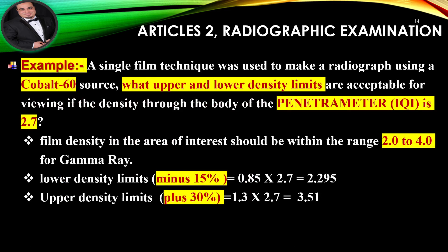Example: A single film technique was used to make a radiograph using a cobalt-60 source. What upper and lower density limits are acceptable if the density through the body of the penetrameter IQI is 2.7? Film density in the area of interest should be within the range 2.0 to 4.0 for gamma ray. Lower density limit: minus 15% equals 2.295. Upper density limit: plus 30% equals 3.51.